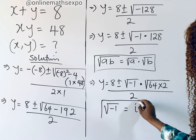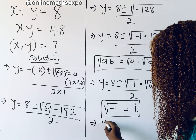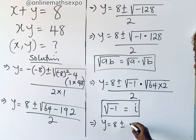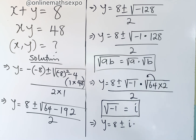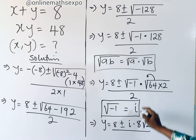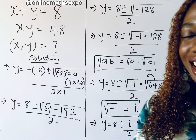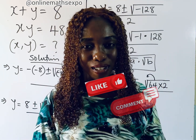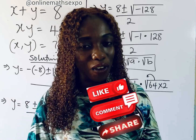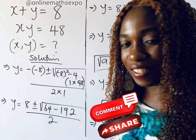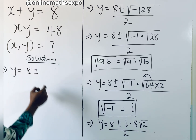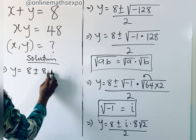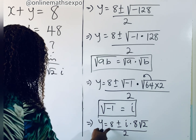Remember that square root of negative 1 is represented by the imaginary unit i. So simplifying, square root of negative 1 gives us i, square root of 64 is 8 (a perfect square), and square root of 2 remains. This gives us y equals 8 plus or minus 8 root 2 i, all divided by 2.